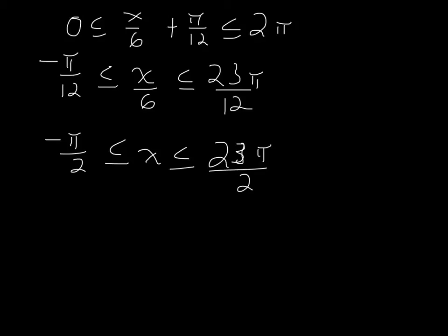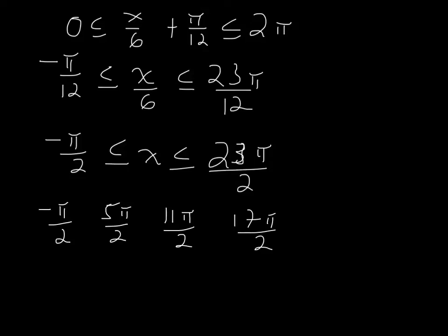So I'm going to graph this like it normally would, but I'm going to have to extend it beyond one period. So in one period, this is negative π over 2. Now adding my interval length of 3π, well, that's really 6π over 2. So I have negative π over 2, I have 5π over 2, I have 11π over 2, I have 17π over 2, and then I have 23π over 2. And this is all in one period. I have my 5 points.